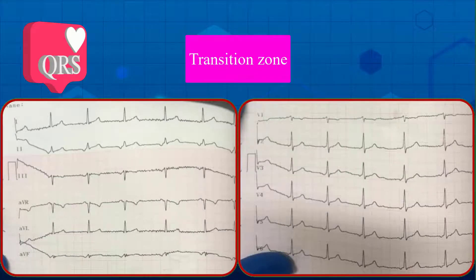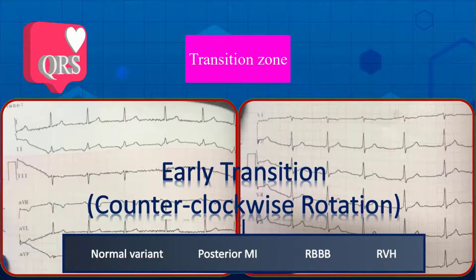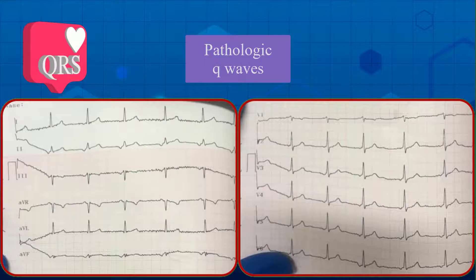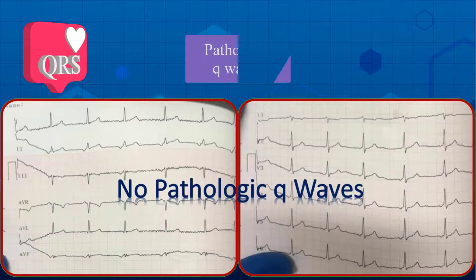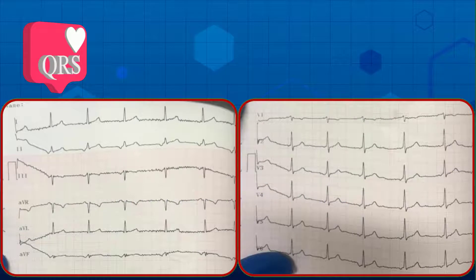Third: R wave progression and transition zone. The transition zone is in V2, so we have early transition — called counterclockwise rotation. It may be seen as a normal variant, posterior MI, RBBB, or RVH. In this tracing, early transition is due to normal variation. Fourth: looking for pathologic Q waves. There is no obvious Q wave in any lead, therefore there is no pathologic Q wave in this strip. In summary, the QRS complexes are generally normal.